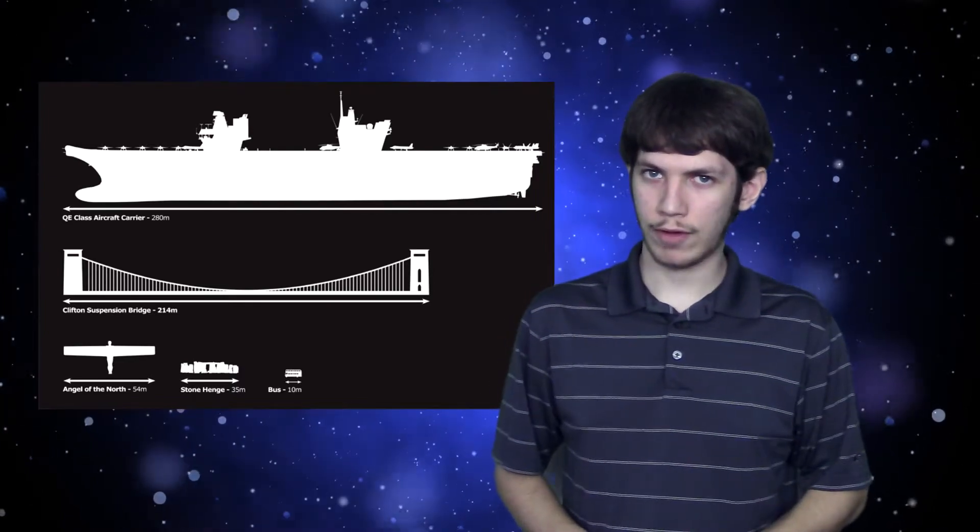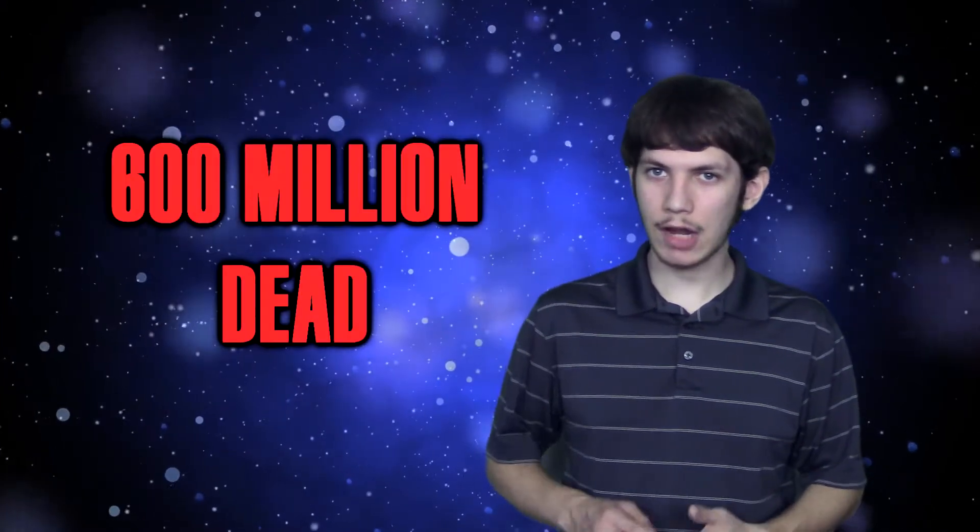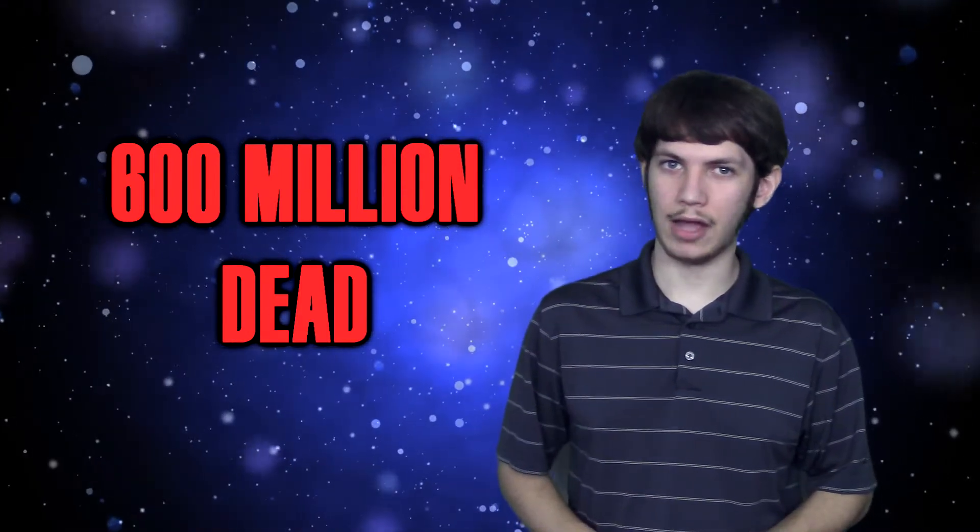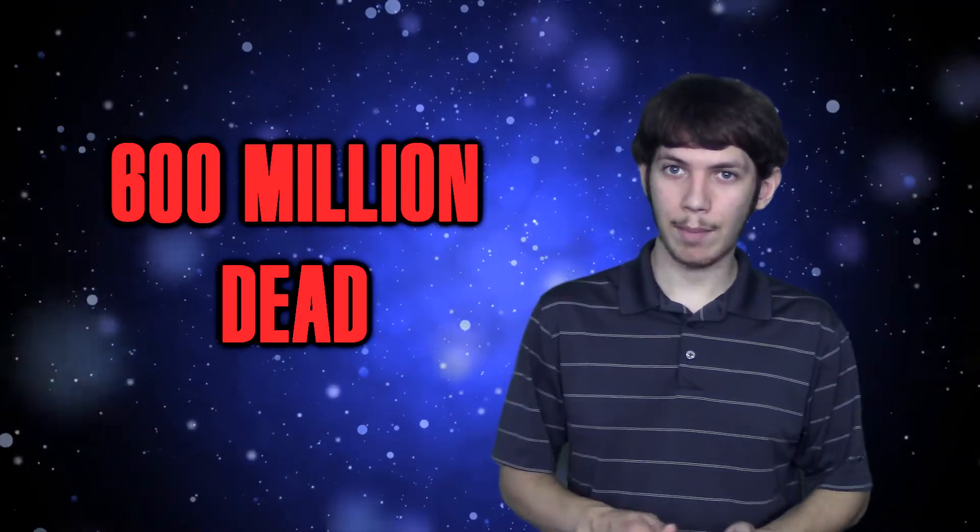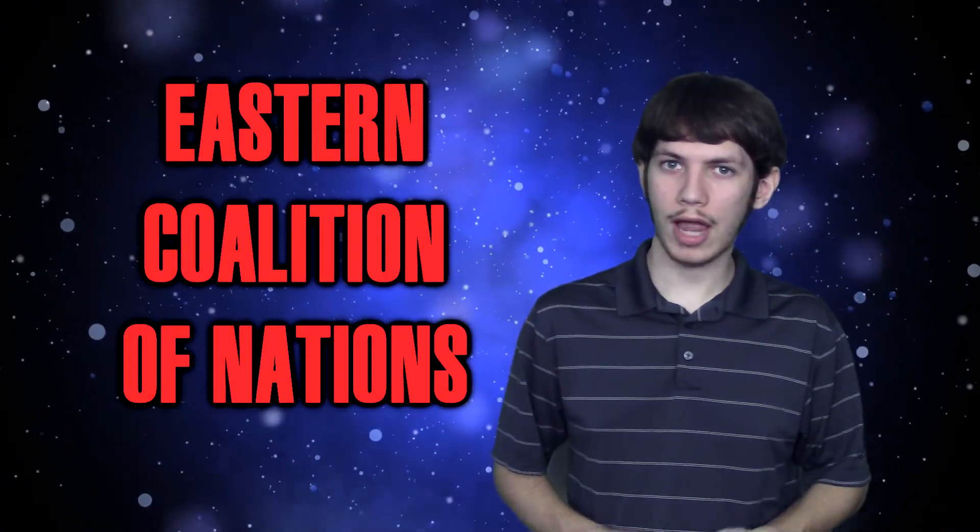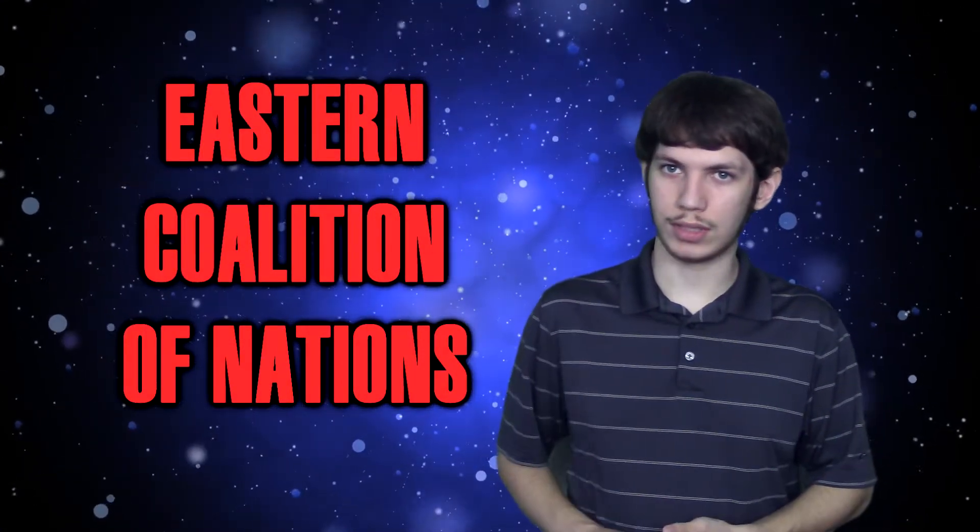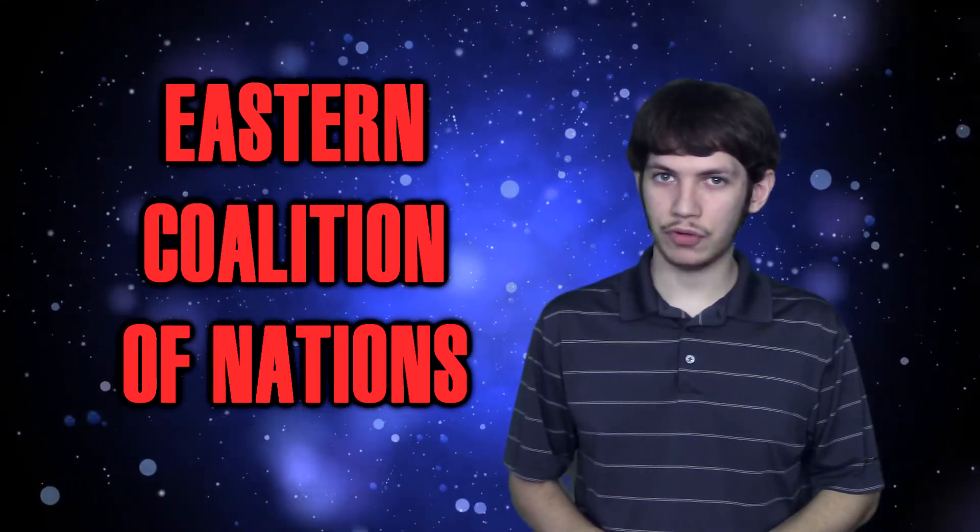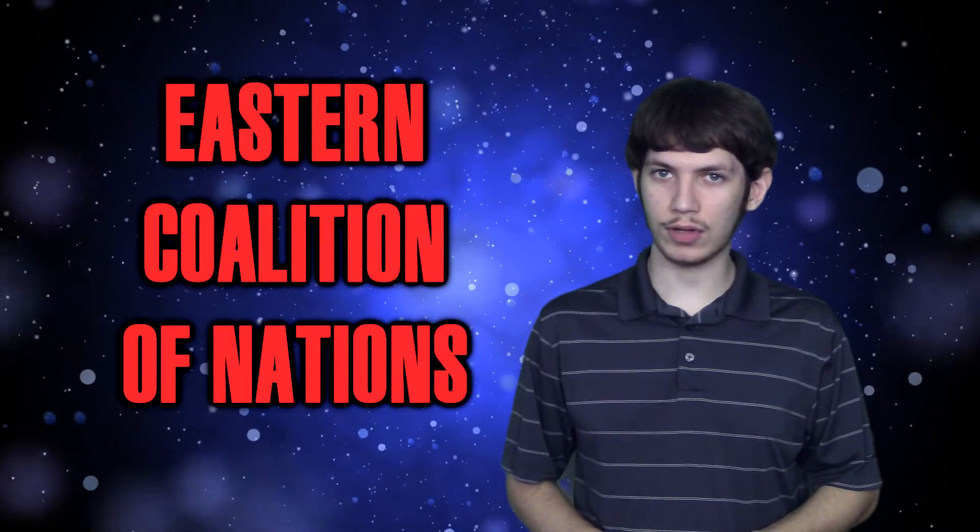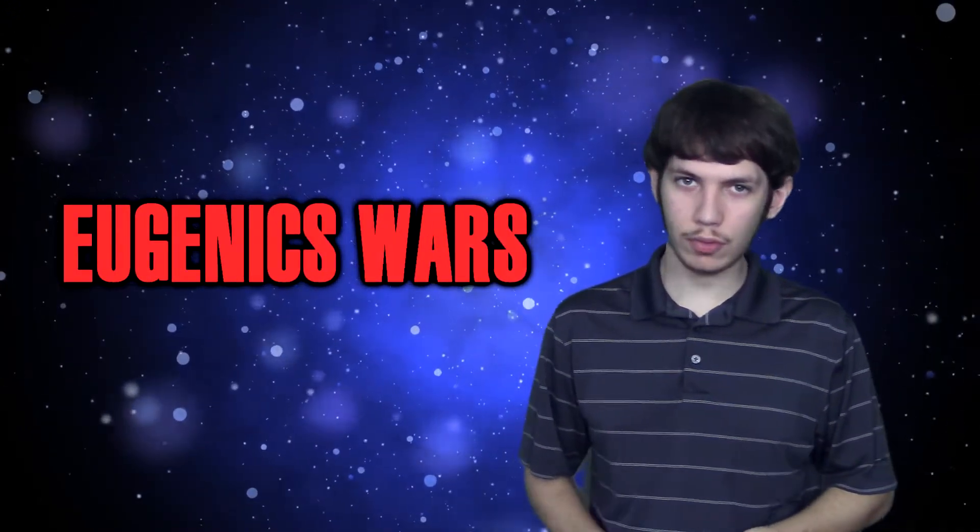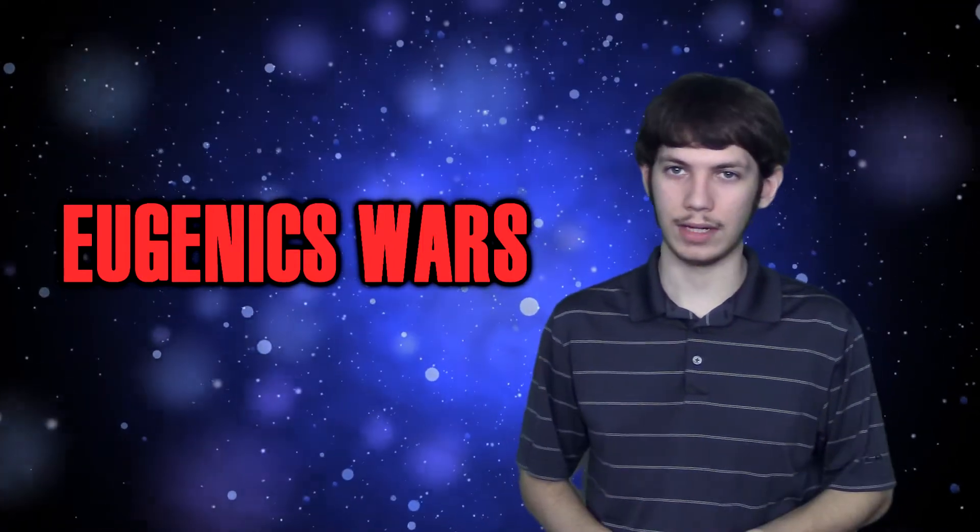What we know about World War III from canon is that it claimed 600 million lives and culminated in the destruction of several cities via nuclear weapons. One of the main combatants is the Eastern Coalition of Nations, which includes China and other Asian states, according to several sources, versus the West and its allies. The ECON, and by extension World War III itself, has its roots in the eugenics wars of the late 20th century, although hostilities don't begin until 2026 as I mentioned in the previous videos.